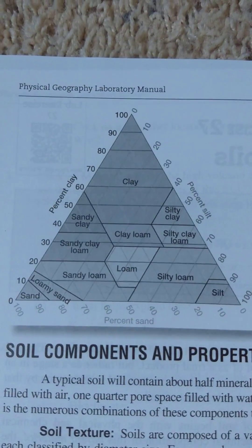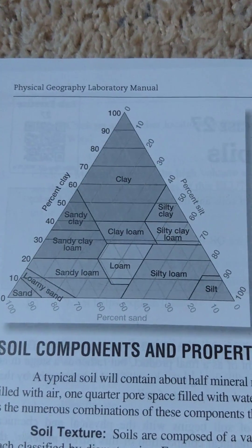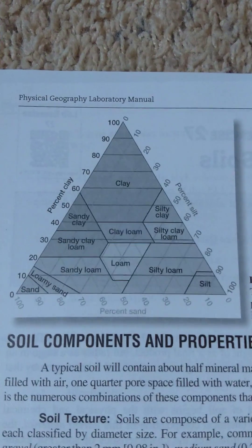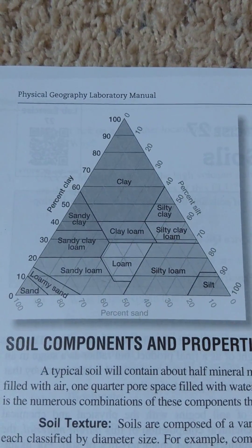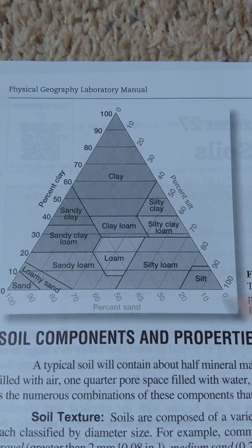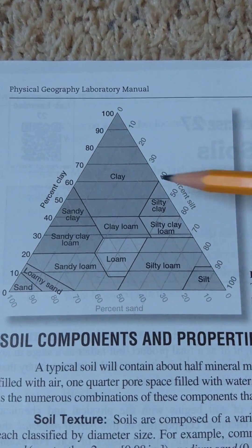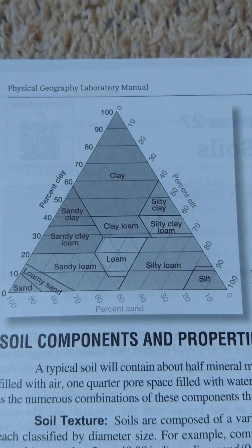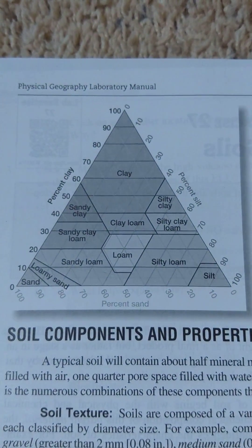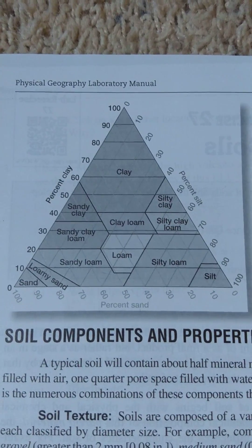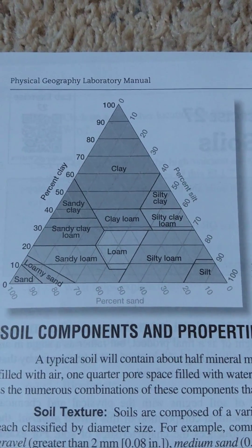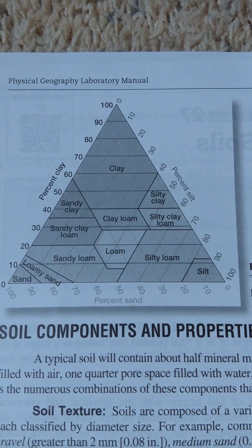I've had some questions on how to use the soil texture triangle, and this is my video response to try to help you out with that. The soil texture triangle is something that soil scientists use to determine what the texture is based on the percentage of sand, silt, and clay, which makes it the inorganic portion of our soil. Generally you're given a percentage of all three of these, but in reality you only need two to determine that.